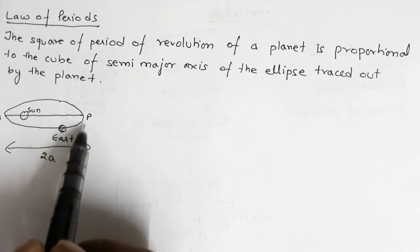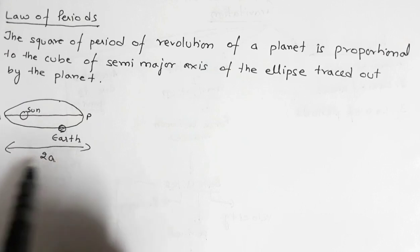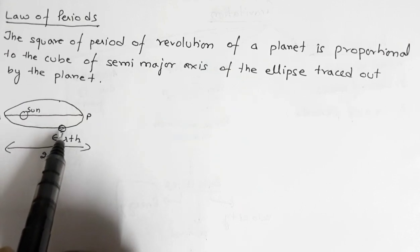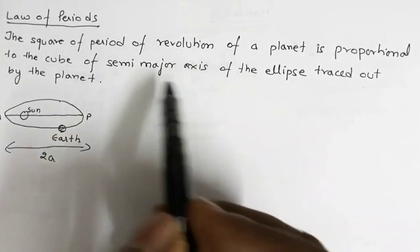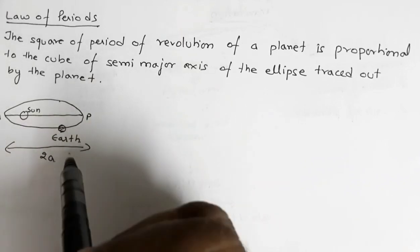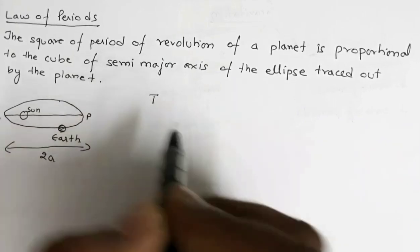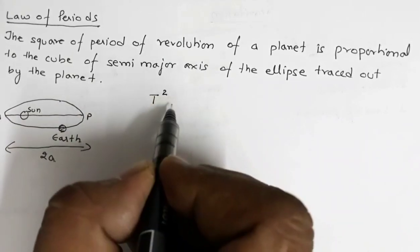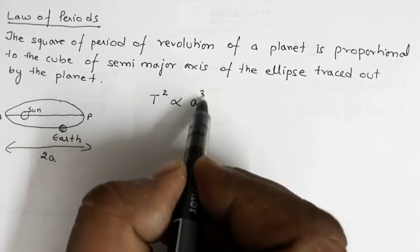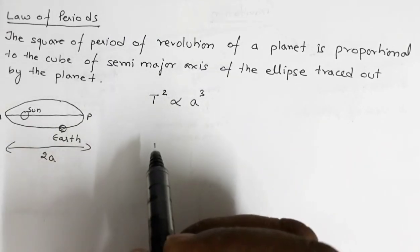The planet Earth is revolving around the sun in this elliptical orbit. AP is the major axis of length twice A, so the semi-major axis is A. If T is the period of revolution, the law states that the square of the period of revolution is proportional to the cube of the semi-major axis. So T² is proportional to A³. This is the law of periods.